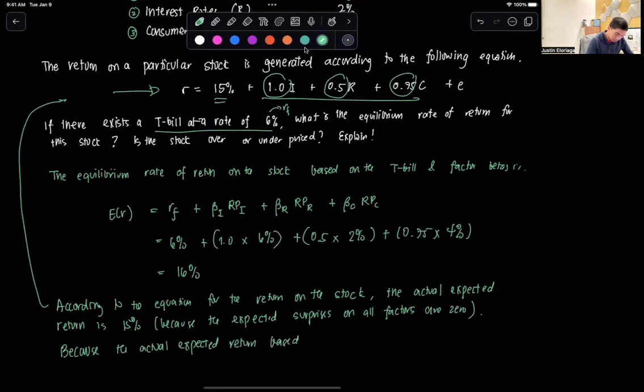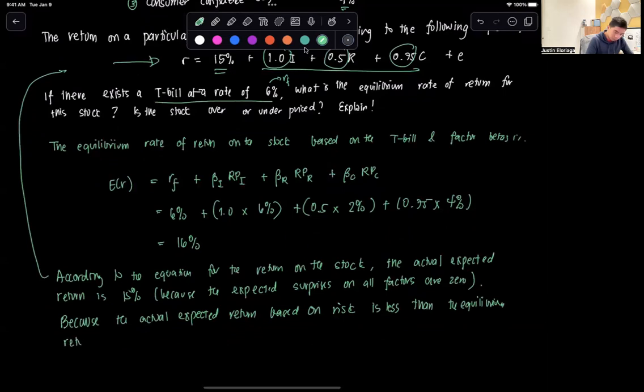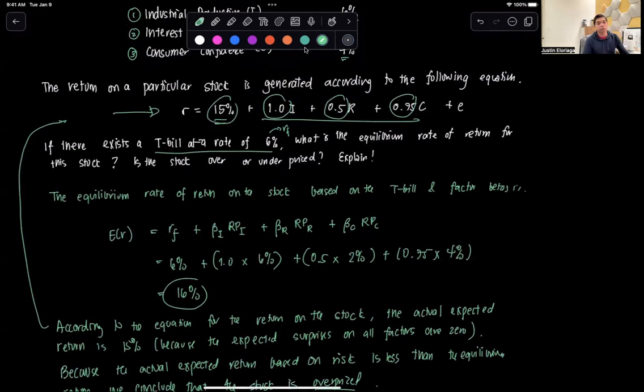Because the actual expected return based on the risk is less than the equilibrium return, we conclude that the stock is overpriced. How can we conclude that? Well, 16 percent is greater than this 15 percent over here.